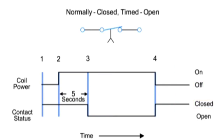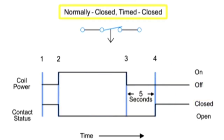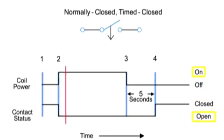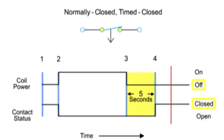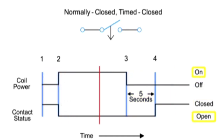The last time delay relay we will look at employs a normally closed, timed closed contact. Similar to the normally closed, timed open contact, this type of contact is normally closed when the coil is de-energized and opened by the application of power to the relay coil. However, unlike the NCTO contact, the timing action occurs when the coil is de-energized instead of when it is energized. Thus, the contacts open immediately when the coil is energized and close five seconds after the coil is de-energized.